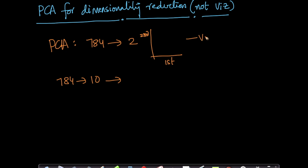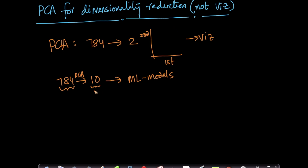This 2D/3D reduction is mostly for data visualization, while you might want to go from 784 dimensions to 10 dimensions when training machine learning models. There is a case where you might want to convert your data from 784 dimensions to something greater than 2 — if it's 2 or 3, it's mostly for data visualization. If it's 10, 20, or even 200, we are going from D to D', and all we need is that D' is less than or equal to D.